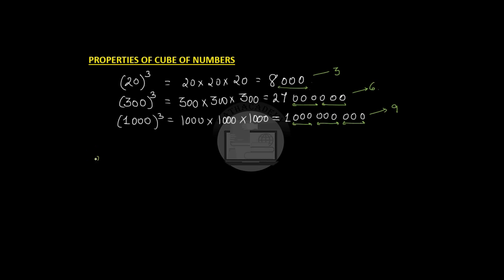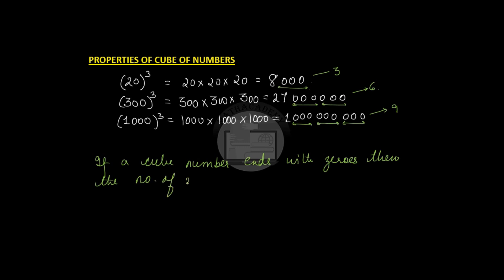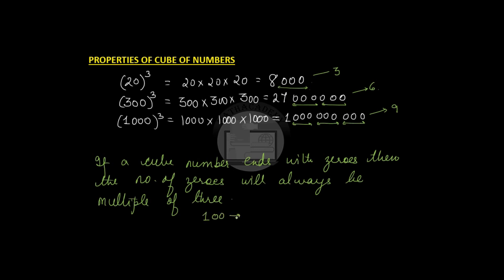So if a cube number ends with zeros, the number of zeros will always be a multiple of three. If I give you a number, say one hundred, and ask you is it a perfect cube number — we look at the number of zeros since it is ending with zeros. The number of zeros are not a multiple of three, and hence it is not a perfect cube number.